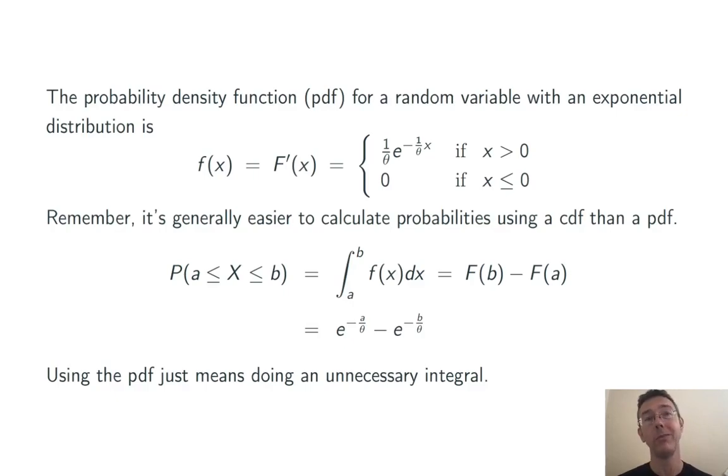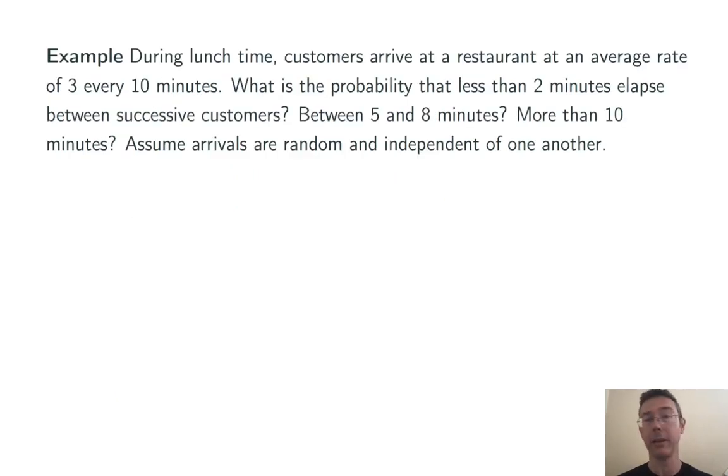If you use the PDF, you generally end up just doing a few extra steps as you compute that integral. The probability that x is between a and b is, in general, e to the negative a over theta minus e to the negative b over theta. Okay, let's do an example.